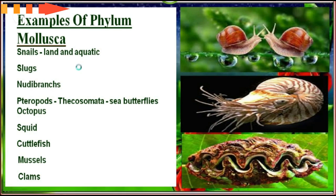Some examples include snails, land and aquatic slugs, squid, cuttlefish, mussels, and clams. These are the representative members, which you can clearly see here.